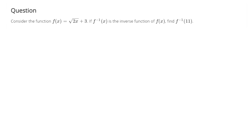So we've got this function f(x) equals the square root of 2x plus 3. We need to talk about the inverse function. So you could pretend this is a y. An inverse function is found by switching the roles of x and y, and then solving for y.